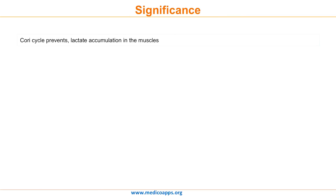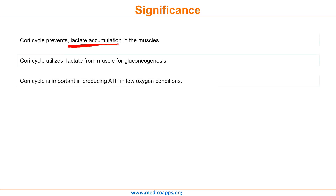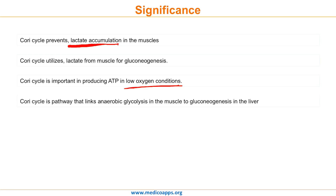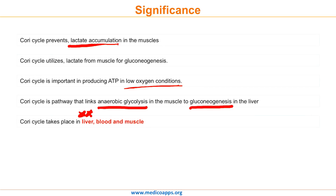We will now study the significance of the Cori Cycle. First, the Cori Cycle prevents lactate accumulation in the muscles. Second, it utilizes lactate from muscle for gluconeogenesis. Third, the Cori Cycle is important in producing ATP in low oxygen conditions. Fourth, the Cori Cycle is a pathway that links anaerobic glycolysis in the muscle to gluconeogenesis in the liver. Fifth, the Cori Cycle takes place in the liver, blood, and muscle.